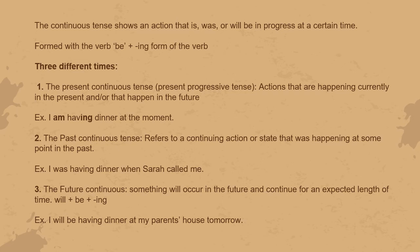The first is the present continuous tense, also called the present progressive tense — an action that is happening currently in the present. For example, 'I'm having dinner at the moment', like I'm sitting and eating dinner. You can see 'am' is the verb 'to be' for the first person, plus the ing-form of the verb 'have'.